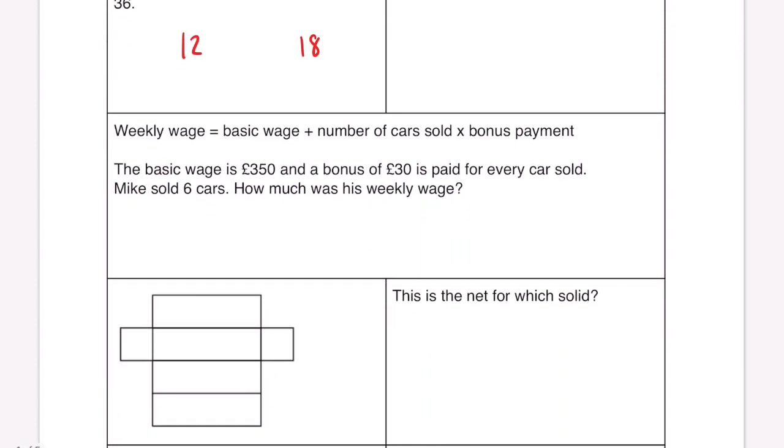Weekly wage equals basic wage plus number of cars sold times by the bonus payment. The basic wage is 350 and a bonus of 30 pounds is paid for every car sold. Mike sold six cars. So because of BIDMAS we have to do the multiplication first which is going to be 350 plus 180 and that's going to be equal to 530 pounds.